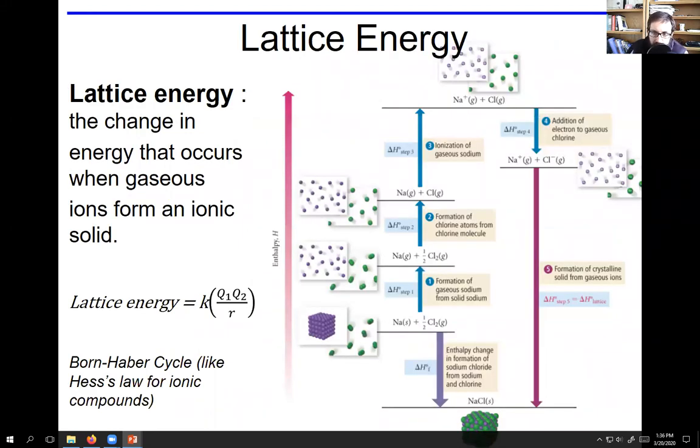The lattice energy in an ionic compound is basically the change in energy that occurs when gaseous ions form an ionic solid. You can think about this as the stabilization energy to form all those minus and positive charges together in an extended solid. You can use thermochemistry and Hess's law to calculate this lattice energy. I just wanted to introduce the concept. We're not going to do any calculations in class about this. Your book does go over it, but you don't need to know it for the purposes of this course.